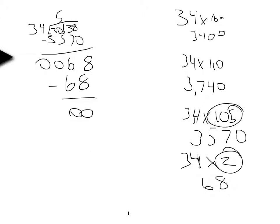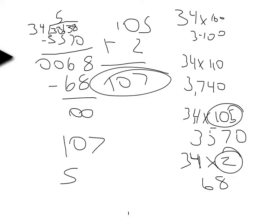34 times 2 equals 68. And 68 minus 68 equals 0. So 105 plus 2, add them together, equals 107. 107 students.